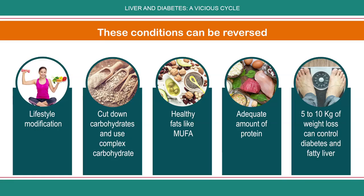I have seen people who just by 10 to 15 kilos of weight reduction are able to completely reverse their liver disease and also get rid of their diabetes at the same time. It is very, very eminently reversible — you are getting rid of two or three problems with one stone, as they say.